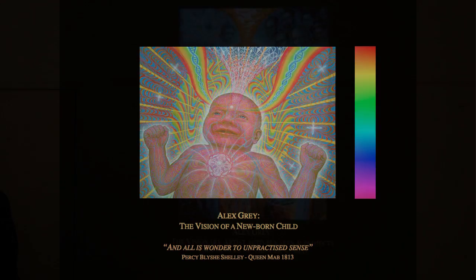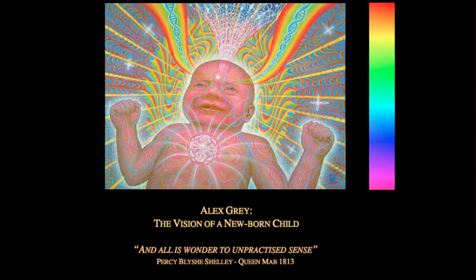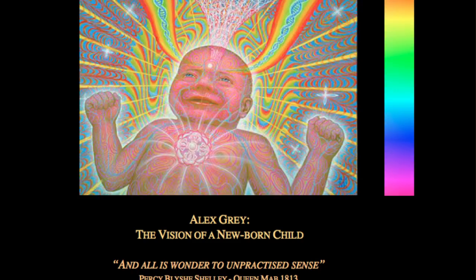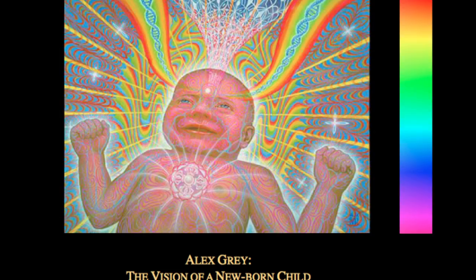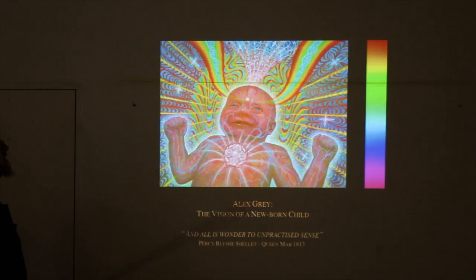Here's Alex Gray's image of a newborn child, which causes you to wonder: how does a child perceive the world? The poet Shelley in Queen Mab wrote, 'And all is wonder to unpracticed sense.' As a child, you could not even distinguish squares from triangles from circles; gradually your eyes focused onto patterns and started to distinguish colors. It seems possible that when we enter deep visionary states, perhaps we are regressing into childhood perceptions of pattern and color, and Alex Gray has represented that through the spectrum.